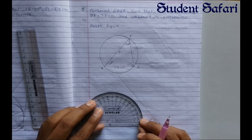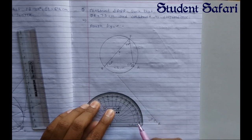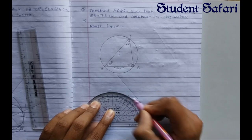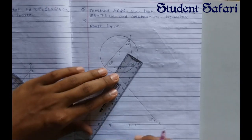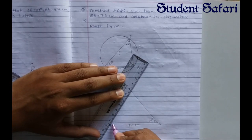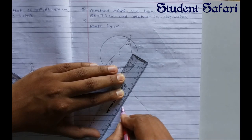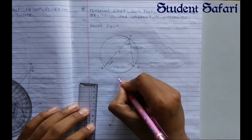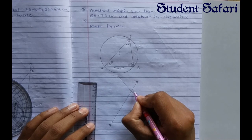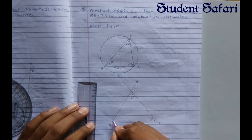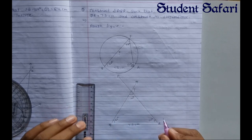Now we have angle Q equal to 60 degrees. Put the protractor on point Q and measure 60 degrees — 10, 20, 30, 40, 50, 60. Joining these two points Q to the new point gives us point P. This new point is our P point, angle at P is 70 degrees, and angle at Q is 60 degrees.